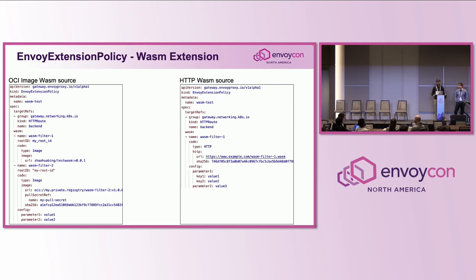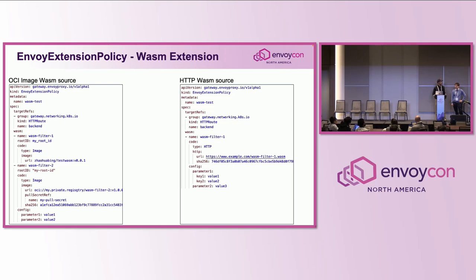Here are some examples of the Envoy Extension Policy with Wasm extension. On the left side is OCI image. The first one is a public image — you only need to specify the URL of the Wasm module within your Envoy Extension Policy. The second is a private image, so you also need to specify the name of the Kubernetes secret that stores the credential for your private image. On the right is an HTTP Wasm source — you only need the URL for the Wasm module.